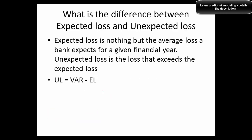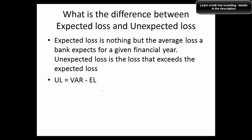The mandatory number for NSFR must be greater than 70%. What is the difference between expected loss and unexpected loss? Expected loss is the average loss a bank expects for a given financial year. Unexpected loss is the loss that exceeds the expected loss — it is essentially the Value at Risk minus the expected loss.